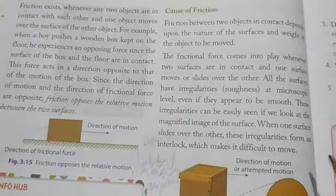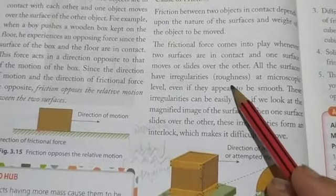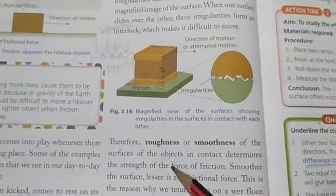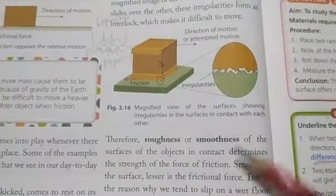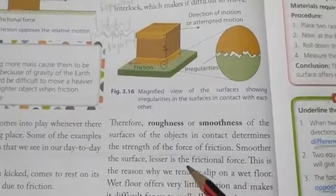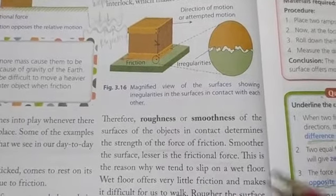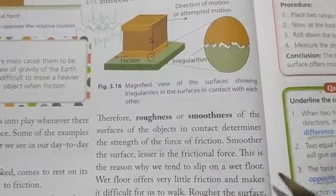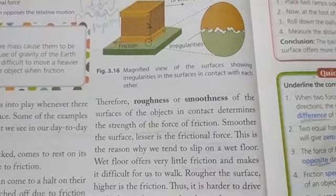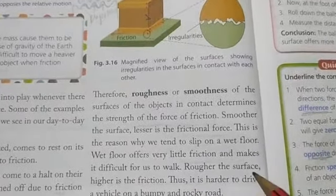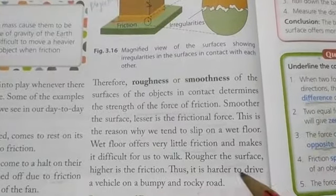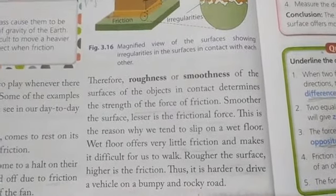Friction depends upon the roughness of the surfaces — the roughness or smoothness of objects in contact determines the strength of the frictional force. Smoother the surface, lesser will be the frictional force; that's why we tend to slip on a wet floor, because it offers very little friction. Rougher the surface, higher will be the friction, which is why it is harder to drive a vehicle on a bumpy and rocky road.